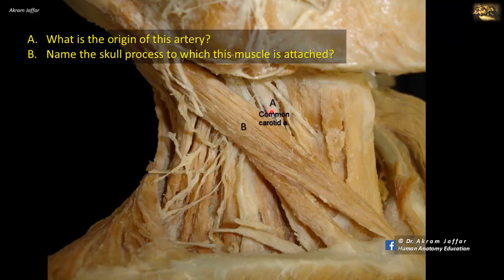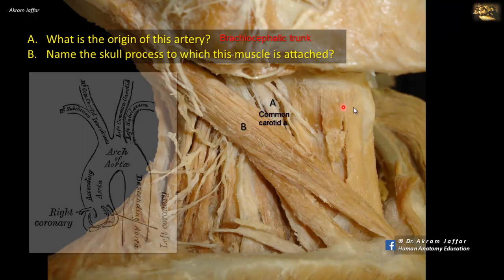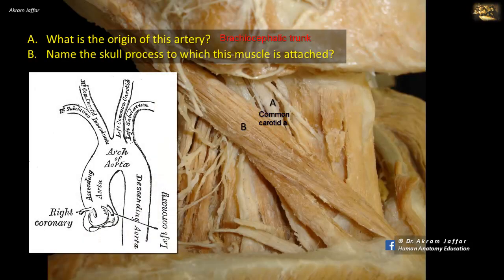The common carotid artery here is on the right side, and so it's a branch of the brachiocephalic trunk. The brachiocephalic trunk provides the right common carotid and right subclavian arteries. If it was on the left side, the left common carotid will be a direct branch of the arch of the aorta, because the arch of the aorta usually gives three branches: the brachiocephalic, which provides the right common carotid and right subclavian, and then the left common carotid and left subclavian arteries separately.